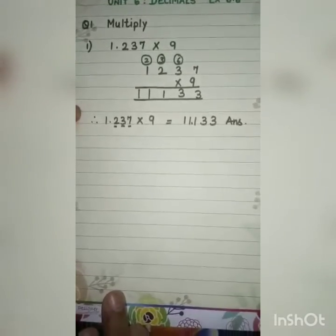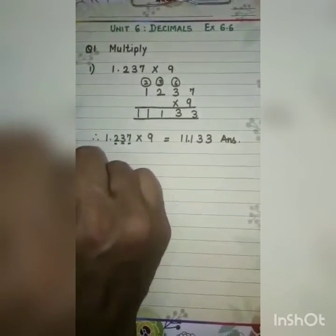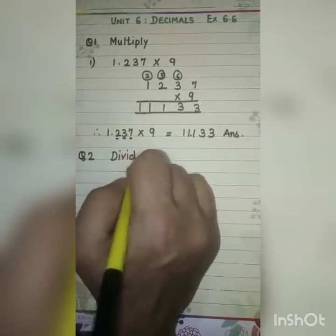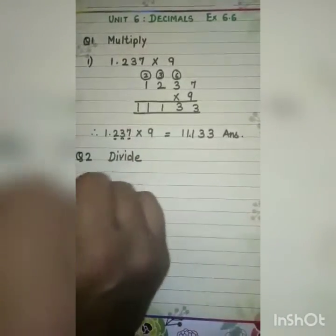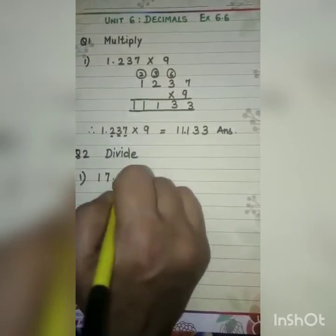So 1.237 × 9 = 11.133. Now the second question is division. When we have to divide, the same pattern has to be followed.